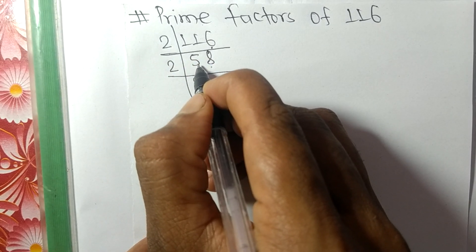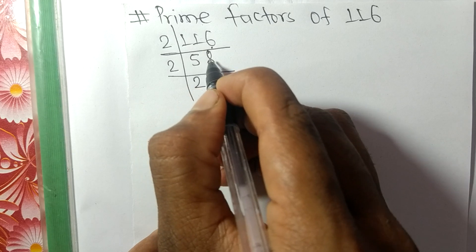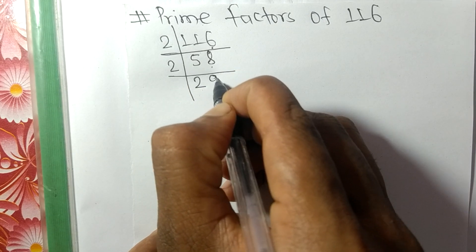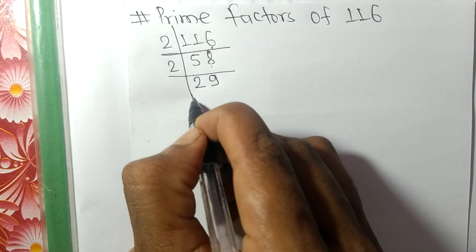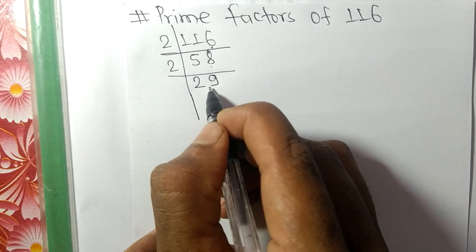2 times 2 is 4, remainder 1. 18. 2 times 9 is 18. Now we have 29, which is a prime number.